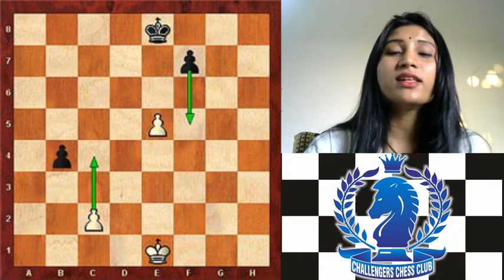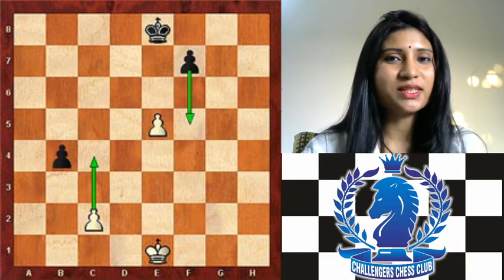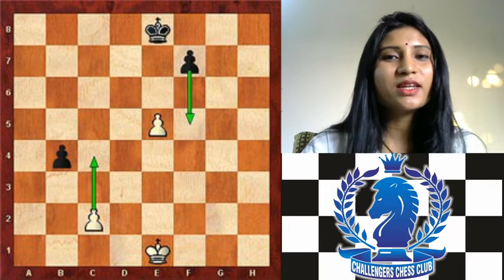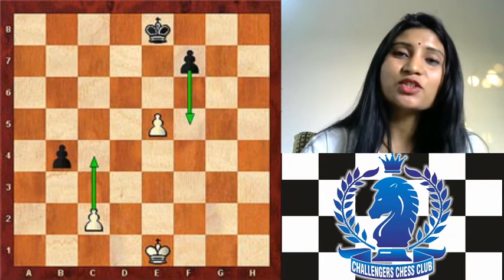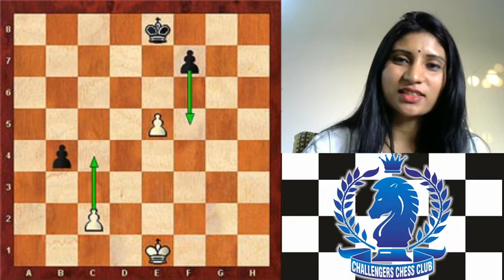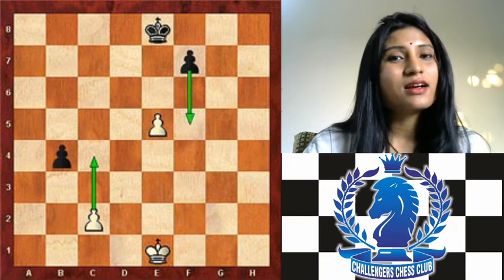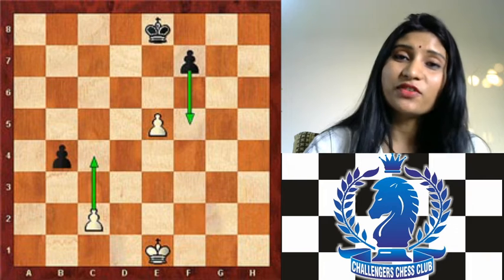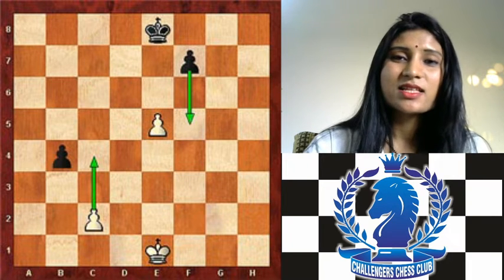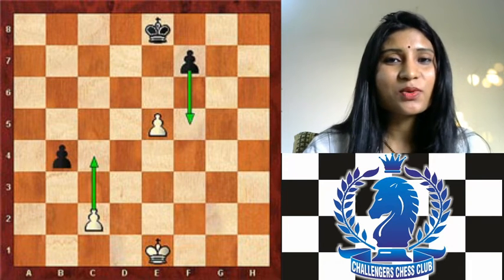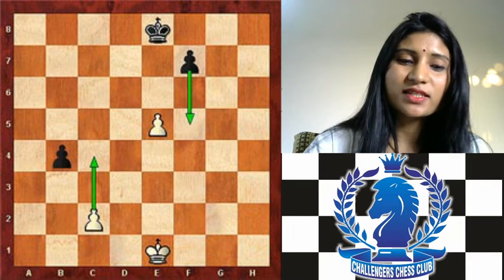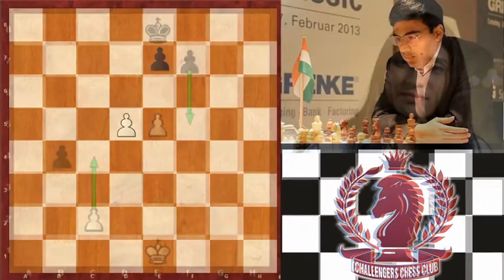In today's video we will learn a new rule: the en passant pawn rule. What is the meaning of en passant? Actually it's a French word meaning 'in passing.' It was invented in the 15th century. So let's learn about the rules of en passant with the help of some positions.